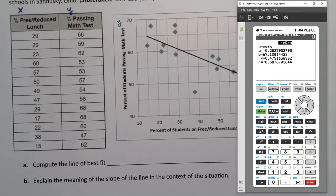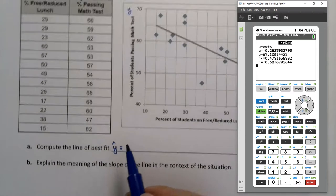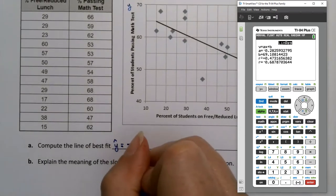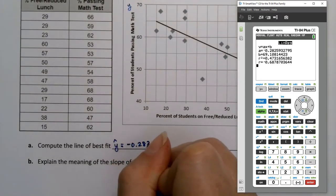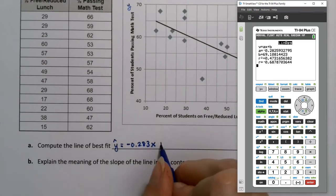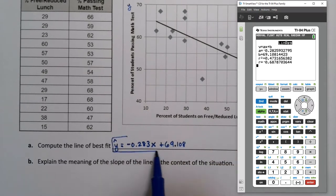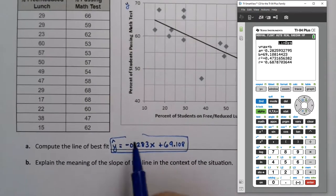So when you write it, you're first of all going to write it with a little hat. They don't do that, although they should, but the calculator just isn't as good about it. And then it's y hat equals negative 0.283x plus 69.108.